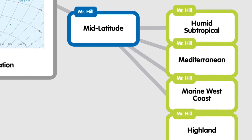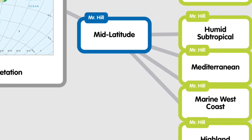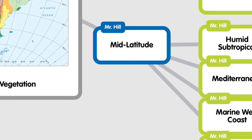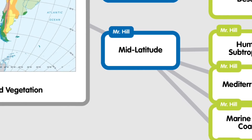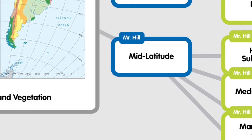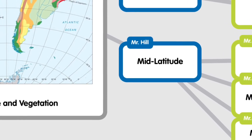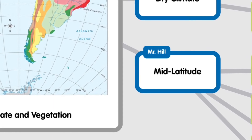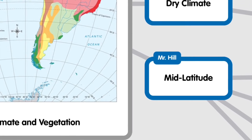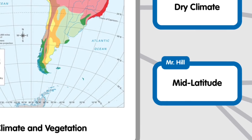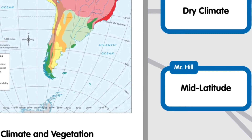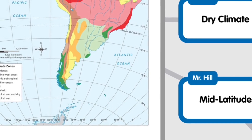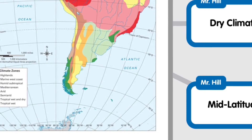Your mid-latitude climate zones include humid subtropical, Mediterranean, marine west coast, and the highlands. In the humid subtropical, this area has rainy winters and hot, humid summers, found in Paraguay, Uruguay, southern Brazil, Bolivia, and northern Argentina, with varied vegetation. Mediterranean climate has hot, dry summers and cool, moist winters, found in parts of Chile along the western coast, featuring chaparral — grassy, savanna-type grasslands. Marine west coast has rainy winters and mild summers, found in the southwestern portions of South America, especially Chile and Argentina, with different types of deciduous forests.